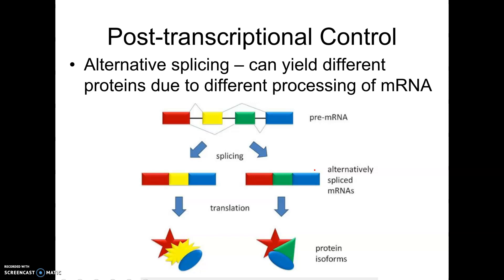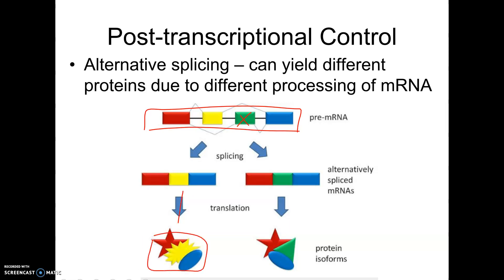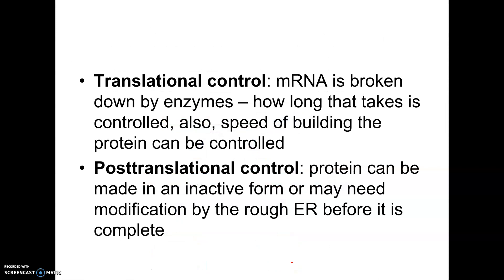We also have post-transcriptional control. After transcription happens in a eukaryote, there's a processing step where the mRNA gets a cap and a tail and gets spliced by spliceosomes. It turns out we can have alternative splicing, meaning the same original mRNA can be cut two different ways. In one case they cut out the green portion and get one protein; in another they cut out the yellow portion and get a different protein. So one mRNA can be spliced together in multiple ways, controlling what proteins we make.